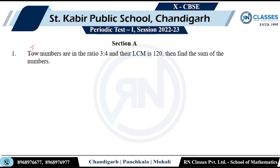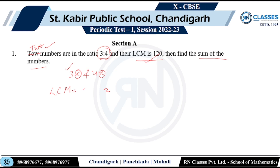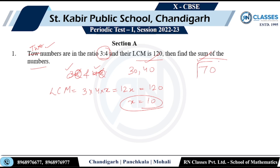First question: two numbers are in the ratio 3:4 and their LCM is 120. Find the sum of the numbers. I'll consider my numbers to be 3x and 4x. Now LCM of 3x and 4x — x is common, 3 must be present, 4 must be present — so LCM is 12x. Since LCM equals 120, x equals 10. So the numbers are 30 and 40, and their sum is 70.